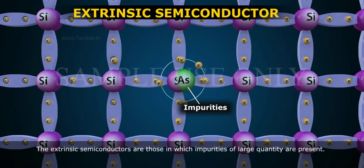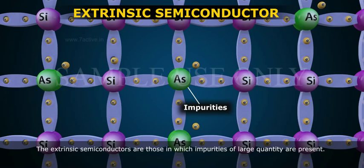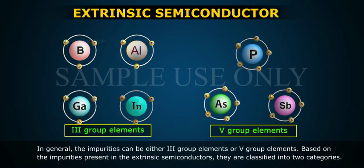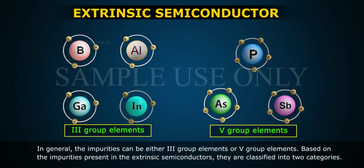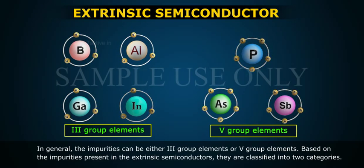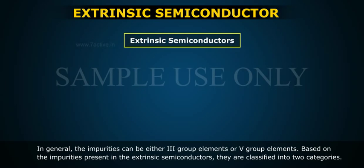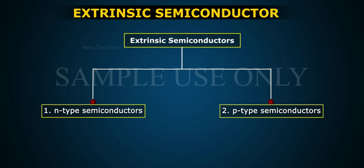The extrinsic semiconductors are those in which impurities of large quantity are present. In general, the impurities can be either third group elements or fifth group elements. Based on the impurities present in the extrinsic semiconductors, they are classified into two categories: 1. N-type semiconductors and 2. P-type semiconductors.